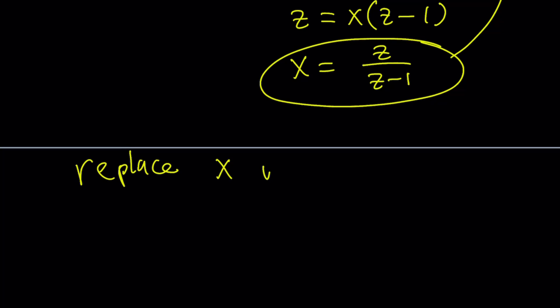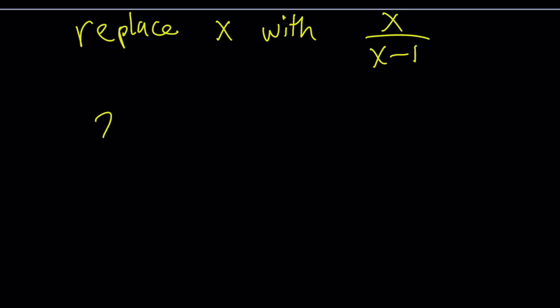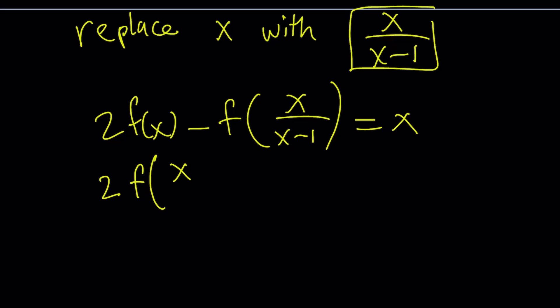Replace x with x over x minus 1. Let me rewrite the original problem. We have 2 f of x minus f of x over x minus 1 equals x. Now we're going to replace x with this everywhere. We're going to get 2 times f of x over x minus 1. And when we do it here and here, we're going to get f of x. We just saw that.